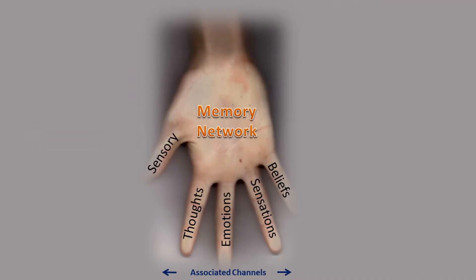You can think of these experiences as being stored in a memory network. Let's say a memory network looks like a hand. The fingers represent channels of information which are associated with each other — these go together to create that whole memory. One channel may have the sensory aspects: the sights, the sounds, the smells and the tastes. Another, the thoughts we had at the time of the original event. Another, the emotions. Another channel could have the physical sensations experienced at that time. And another channel, the negative self-belief about ourselves which is created by that experience — think of that as a verbal summary of the stored affect.